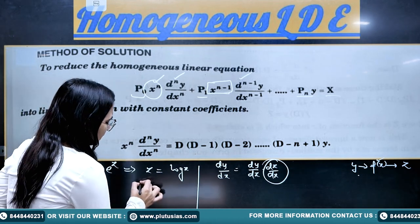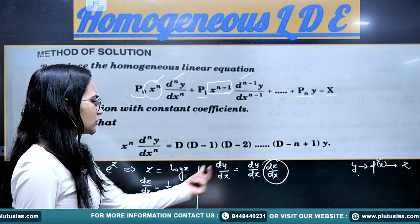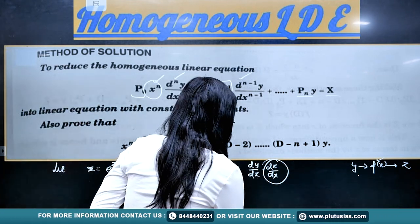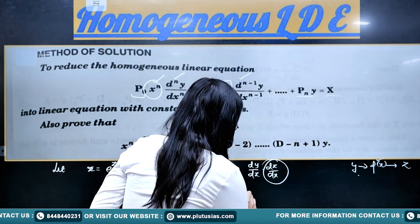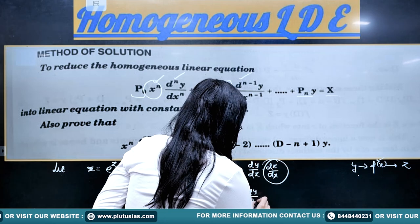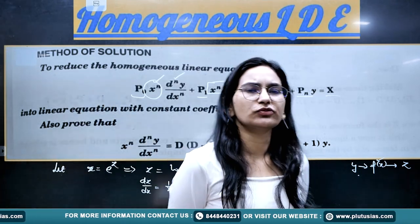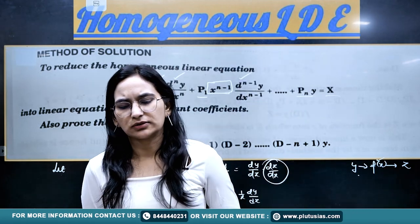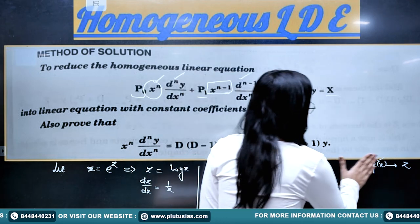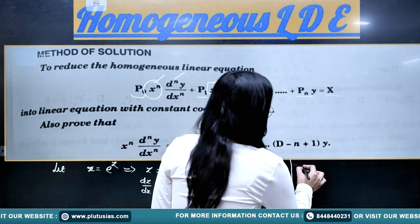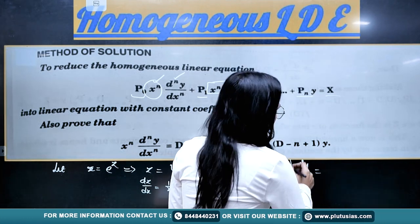Substituting dz/dx = 1/x, we get dy/dx = (1/x)·(dy/dz). Once you have converted the first-order differential coefficient into z-format using this operator, the next step is to find d²y/dx². To find d²y/dx², we differentiate dy/dx again with respect to x.